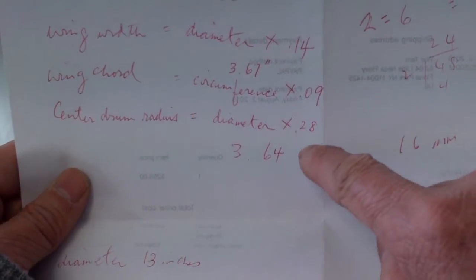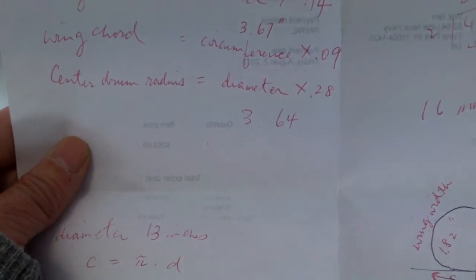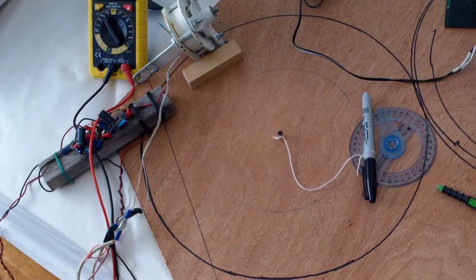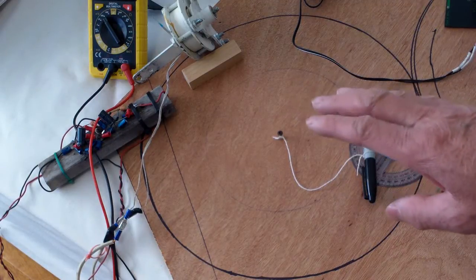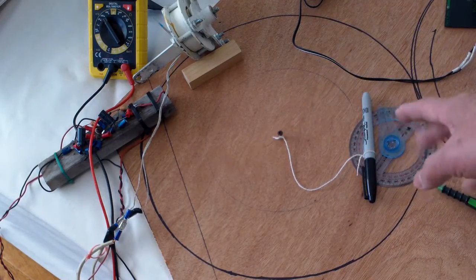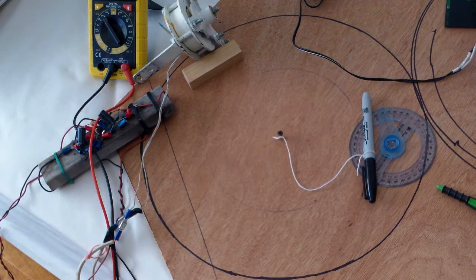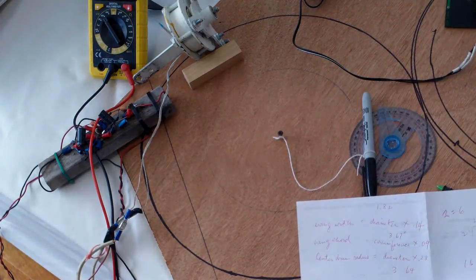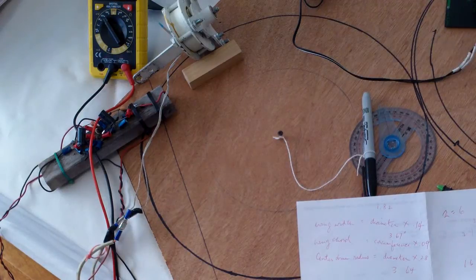The center drum radius would be the diameter of that board there times 0.28, and that would be 3.64. I'll cut pieces out of that obviously. That's where I'm at now. It's something small so I can do it inside my house and I don't have to go to my garage.